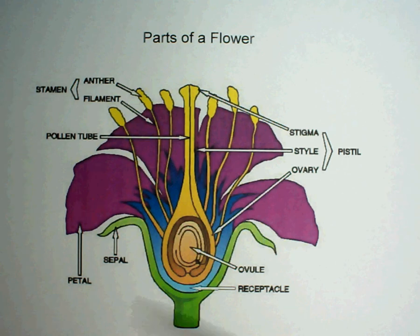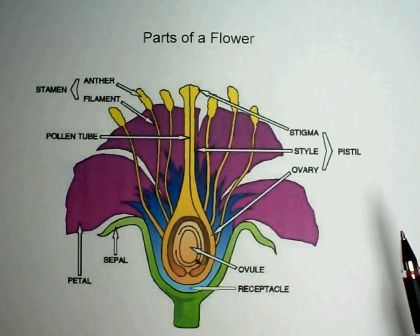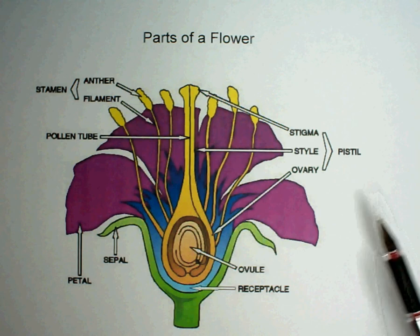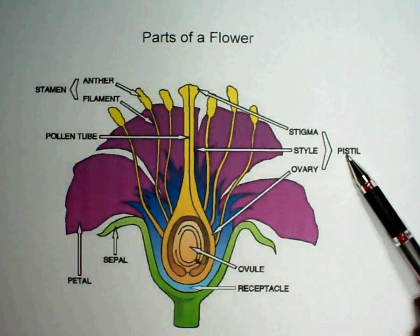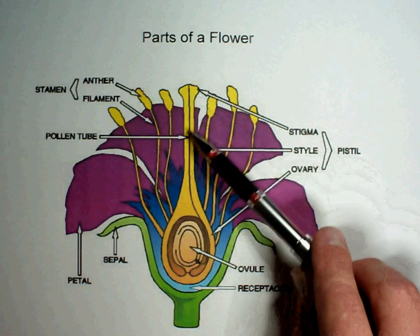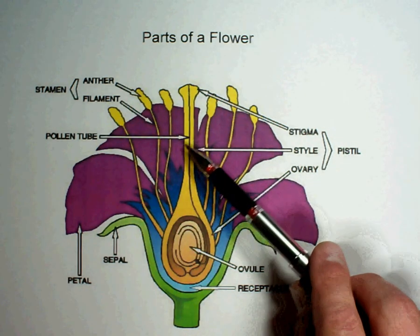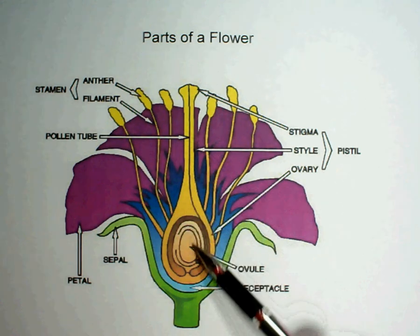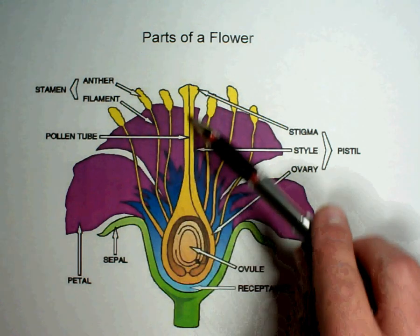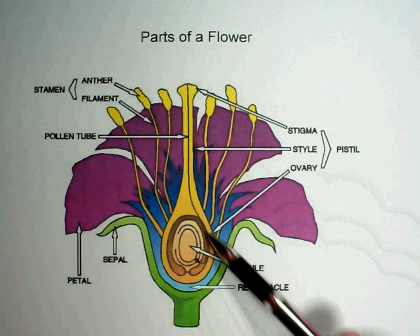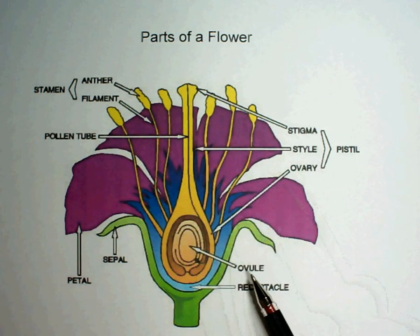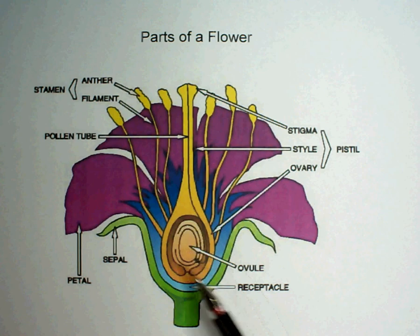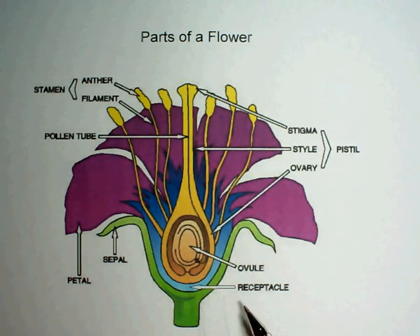All flowers have these same basic parts. You have the pistil, and this is the female part of the flower. It has the stigma, the style, and the ovary. All of this in the middle is the female part of the flower. The ovary is here, the ovule is in the very middle — that's what can be fertilized — and the receptacle is just where it sits at the bottom.